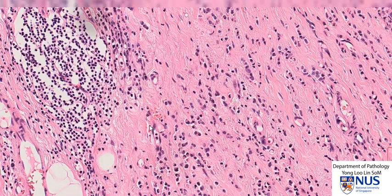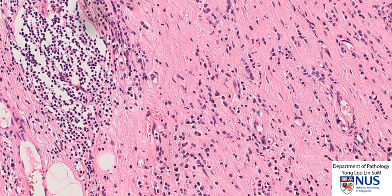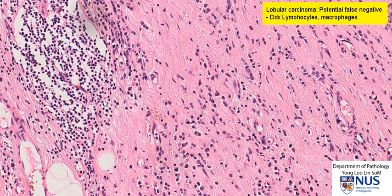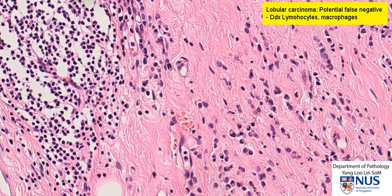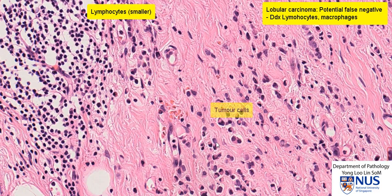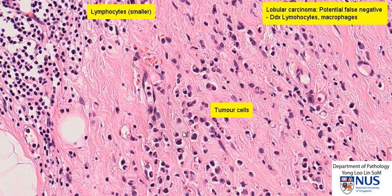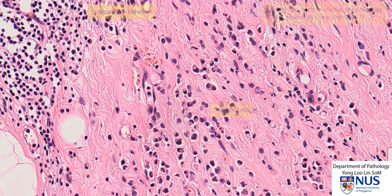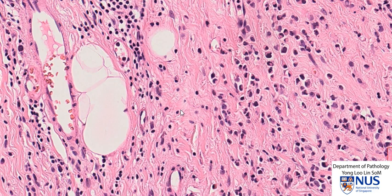Lobular carcinoma can sometimes be mistaken for other cell types like lymphocytes, and therefore they could just be missed and thought to be chronic inflammatory cells. Whereas if we look carefully here, here is an aggregate of lymphocytes, and these are tumor cells. If you compare them, you can see that the tumor cells are actually larger than lymphocytes. But we have to be aware of this potential pitfall in order that we do not miss lobular carcinoma cells.